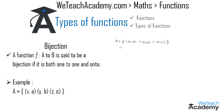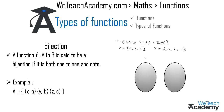Let us write the elements of both sets X and Y. All the x-coordinates — x, y, z — are the elements of set X, and all the y-coordinates — a, b, c — are the elements of set Y. Now let us represent both sets in the form of a Venn diagram, writing the elements of X and Y in their respective diagrams.